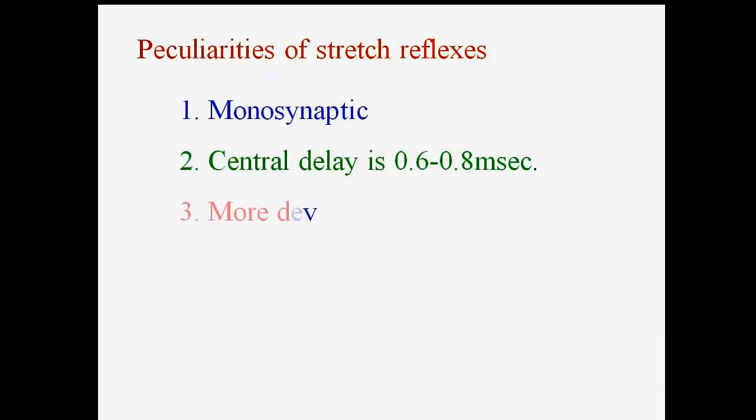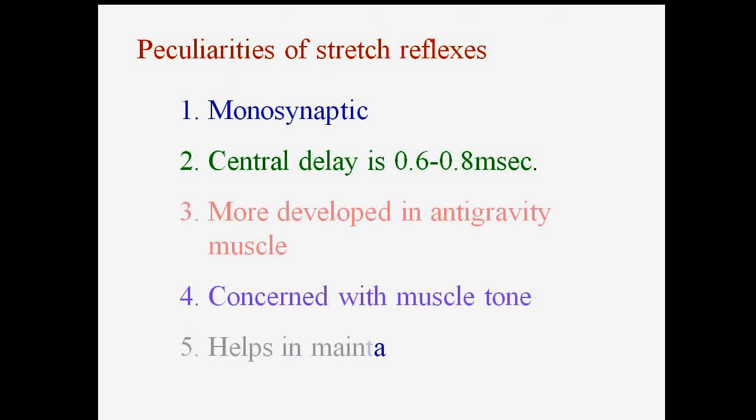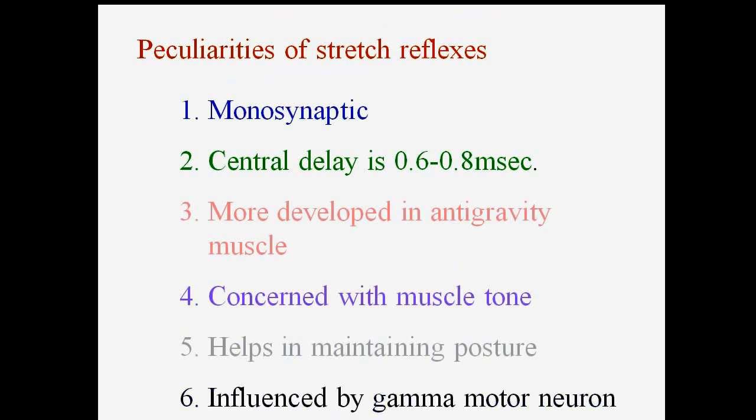The peculiarities of the stretch reflex are: it is a monosynaptic reflex; the central delay is about 0.6 to 0.8 milliseconds; it is more developed in anti-gravity muscles; it is concerned with muscle tone; it helps in maintaining posture; and it is influenced by gamma motor neurons. These are the six important peculiarities of the stretch reflex.